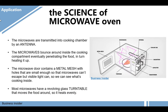A microwave is transmitted into a cooking chamber by an antenna. The microwaves bounce around inside the cooking compartment, eventually penetrating the food and heating it up. The microwave door contains a metal mesh with holes that are small enough so that microwaves can't escape, but visible light can, so we can see what's cooking inside.